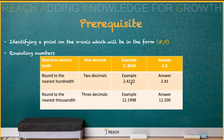So 2.41 is our answer for nearest hundredth. For nearest thousandth, that's three decimals — 1.999 — but the next number is an eight, so you have to round it up. So the answer would be 1.200.